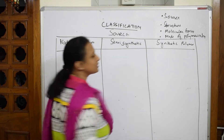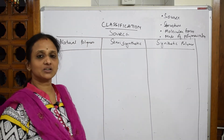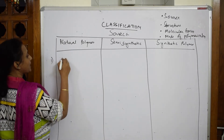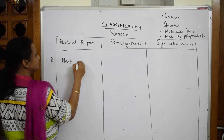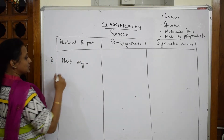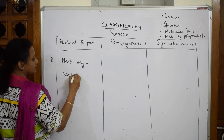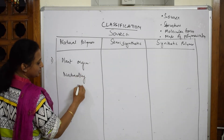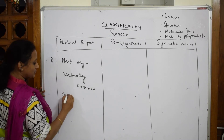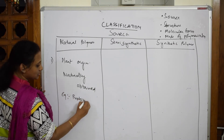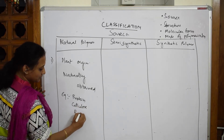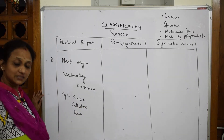Natural polymers are those obtained naturally from plant origin. Examples include proteins, cellulose, and resins — all of these are naturally obtained polymers.